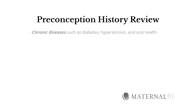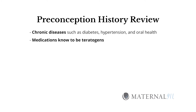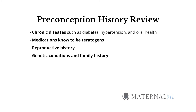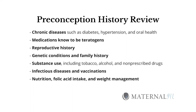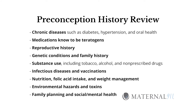A preconception history includes review of chronic diseases such as diabetes, hypertension, and oral health; medications known to be teratogens; reproductive history; genetic conditions and family history; substance use including tobacco, alcohol, and non-prescription drugs; evaluation for infectious diseases and vaccinations; nutrition, folic acid intake, and weight management; environmental hazards and toxins; and family planning.